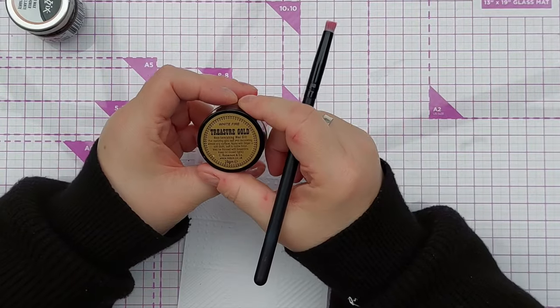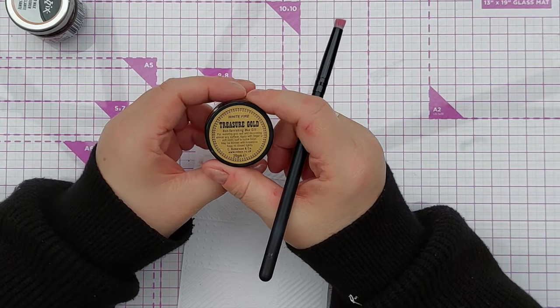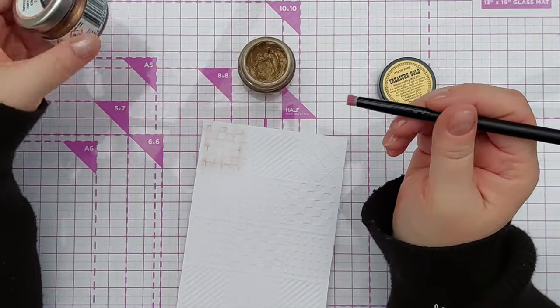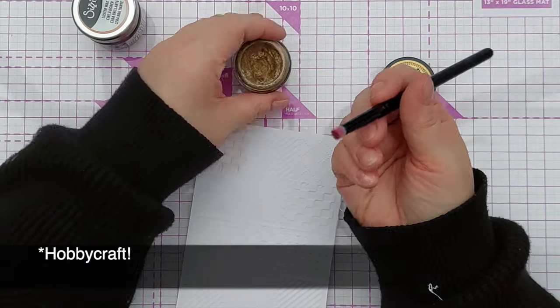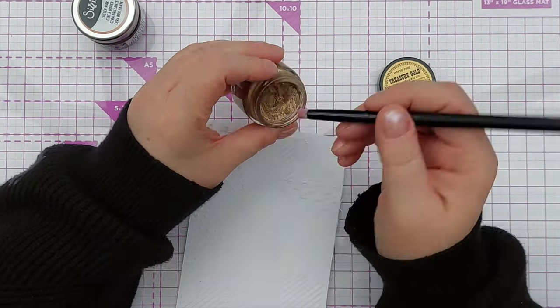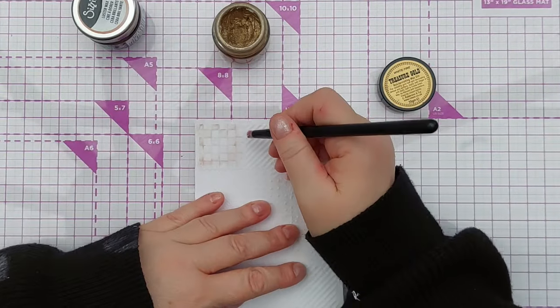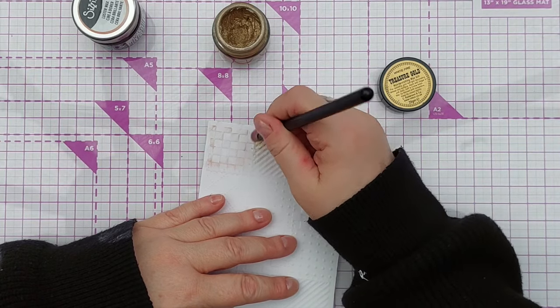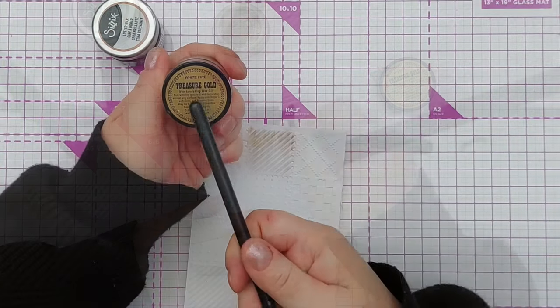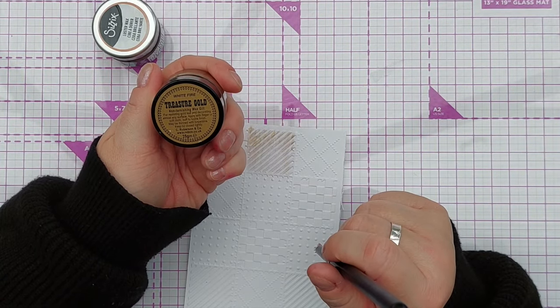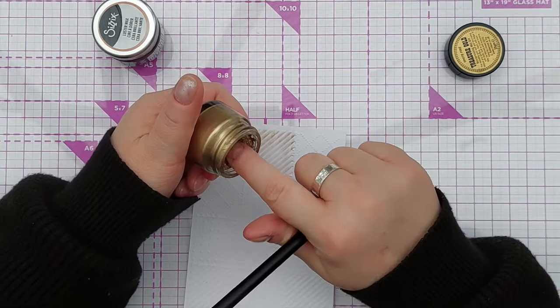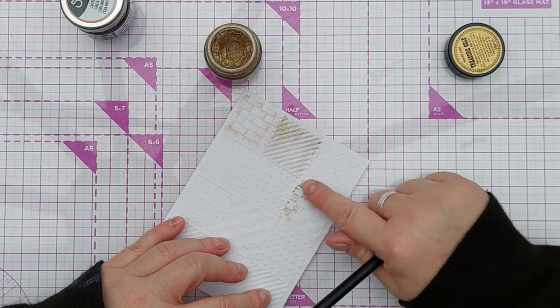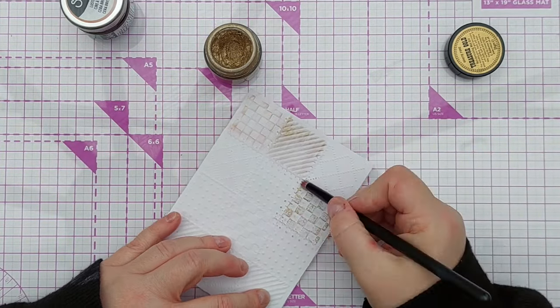And this one is White Fire Treasure Gold non-tarnishing wax guilt. I picked this one up at an art shop. This one you can brush it on and it gives a beautiful luster. It does say apply with finger or soft cloth, buff to luster finish. So you can use your finger, you get a different effect.